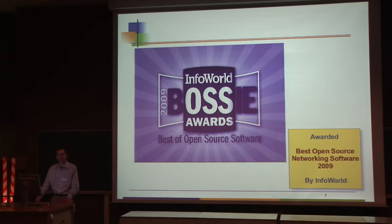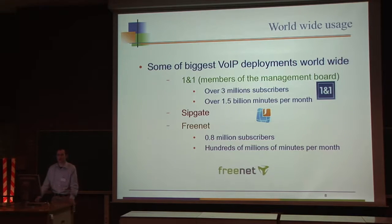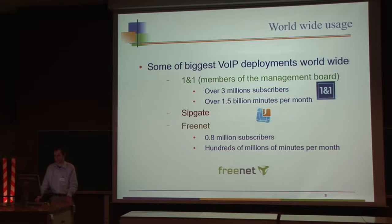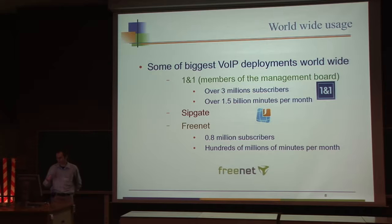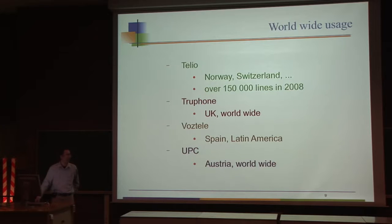Last year was a pretty good one and we got some nice awards. It was not by luck because the project right now serves some of the biggest deployments. I want to mention 1&1 in Germany, which now has over 3 million subscribers after integrating with FreeNet — probably close to 4 million. SIPgate, another very popular VoIP provider in Germany, is also using a solution based on this project, along with other projects like Asterisk.